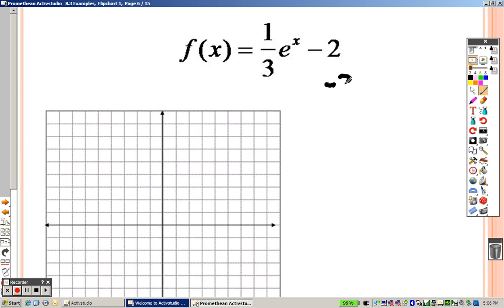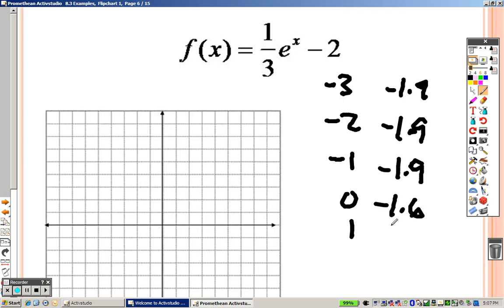We have negative 3, that gives you negative 1.9. Negative 1 gives you about negative 1.9. 0 gives you about negative 1.6. 1 gives you about negative 1.1. 2 gives you 0.46. 3 gives you 4.7 roughly. And 4 jumps you up to 16.